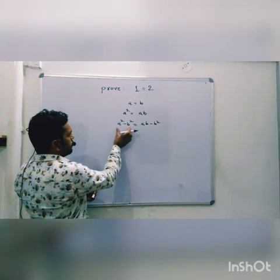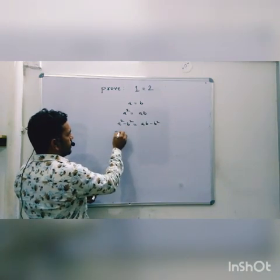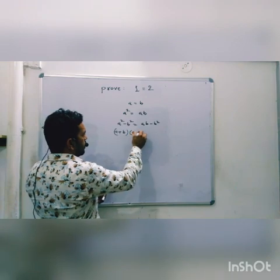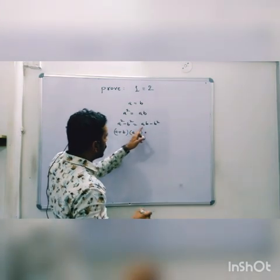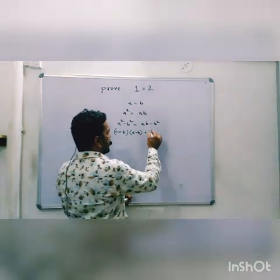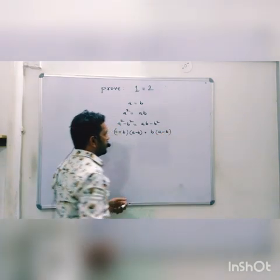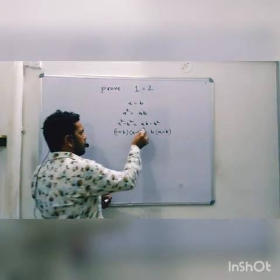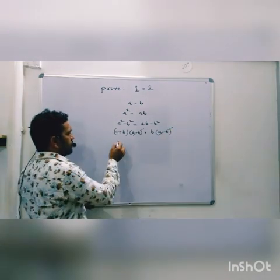After factorization of this expression, you will get a plus b, multiplied by a minus b. And here, you can take b as a common factor. So, b multiplied by a minus b. A minus b and a minus b cancel out.